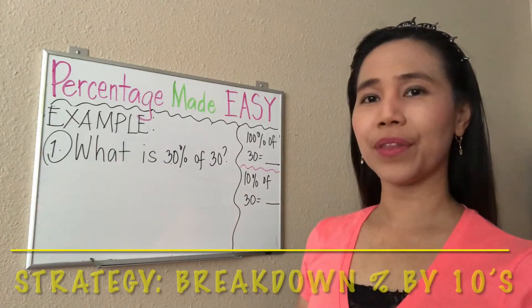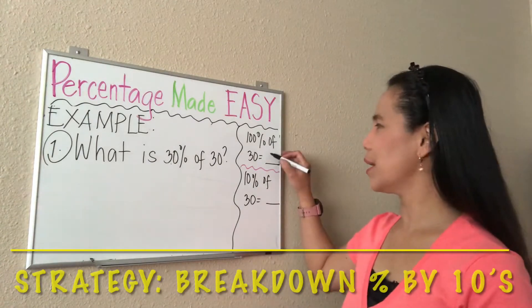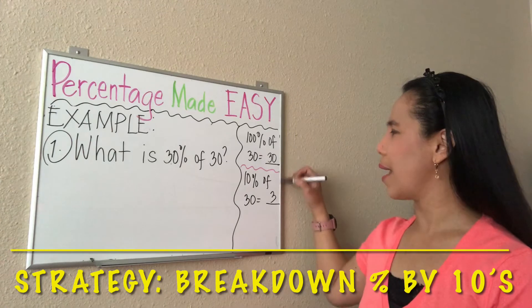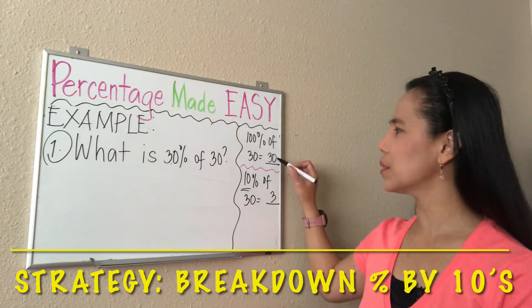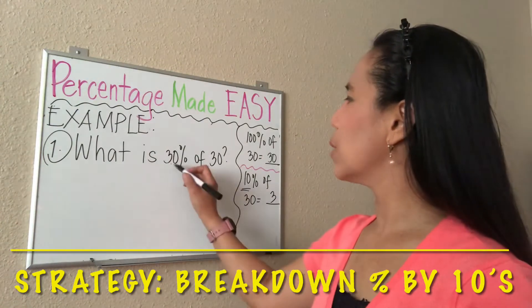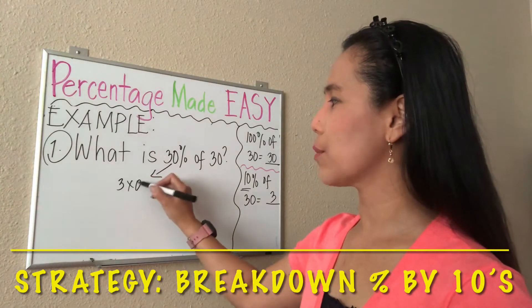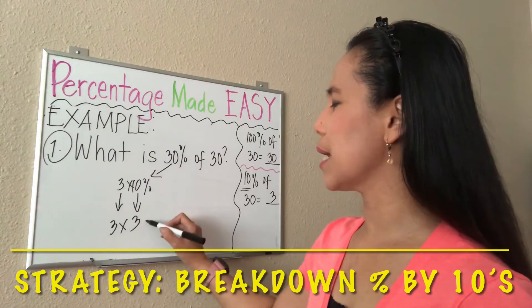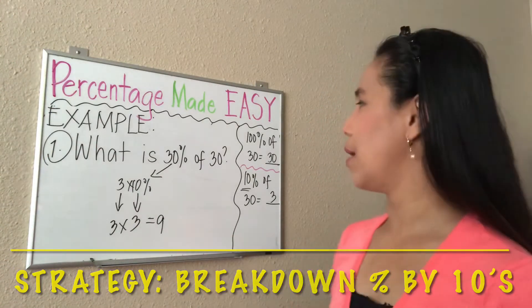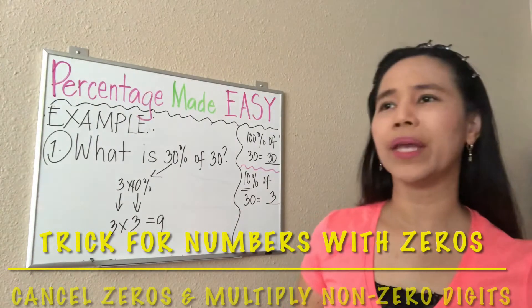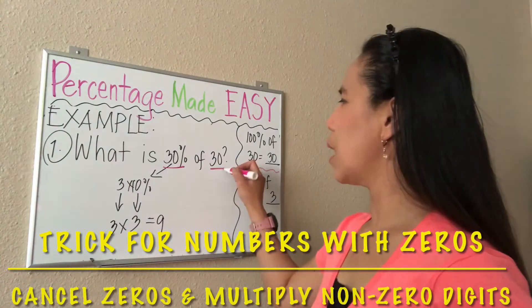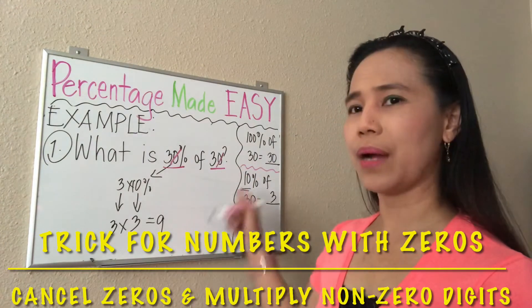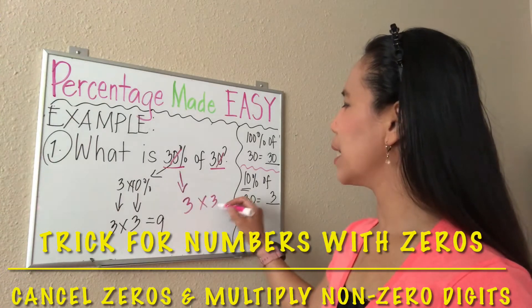Let's have this first example: what is 30% of 30? Remember that 100% of 30 is 30, and 10% of 30 is equal to 3. If you know the whole, just divide it by 10, so 30 divided by 10 gives us 3. Since 30% is 3 times 10%, and 10% of 30 is 3, you can just multiply 3 times 3, which gives us 9. You can also use another strategy when you have zeros—cancel the zero here and the zero there, so 3 times 3 gives you 9.